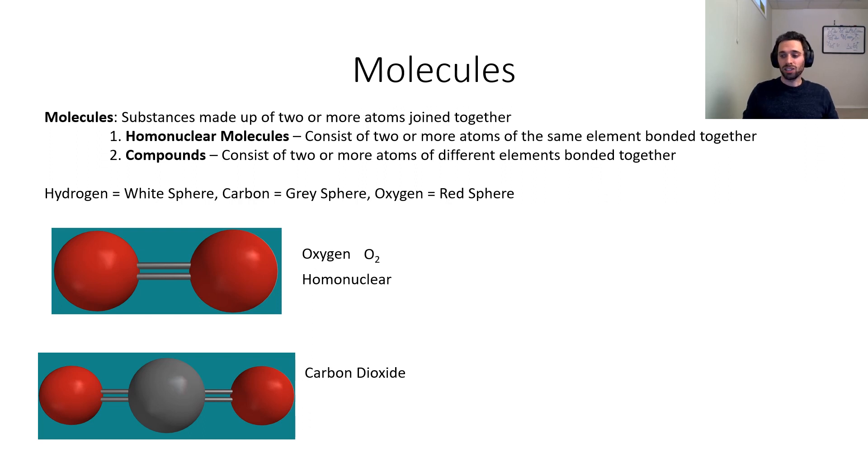This has the molecular formula CO2. We see one carbon in the middle attached to two oxygens, so CO2 would be its molecular formula, and it is a compound because it consists of two or more atoms of different elements bound together.